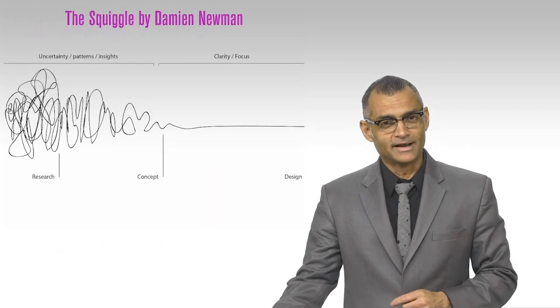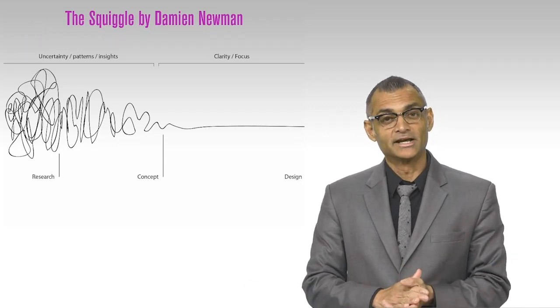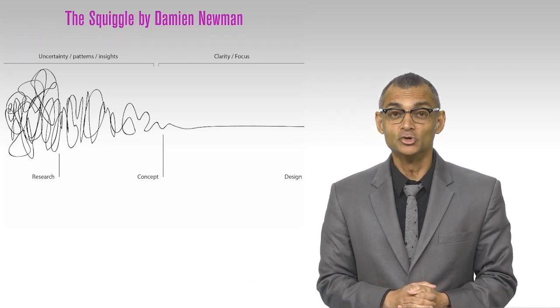I'm going to show a quick diagram that explains the design process. This is called the squiggle, which was designed by a designer, Damien Newman.